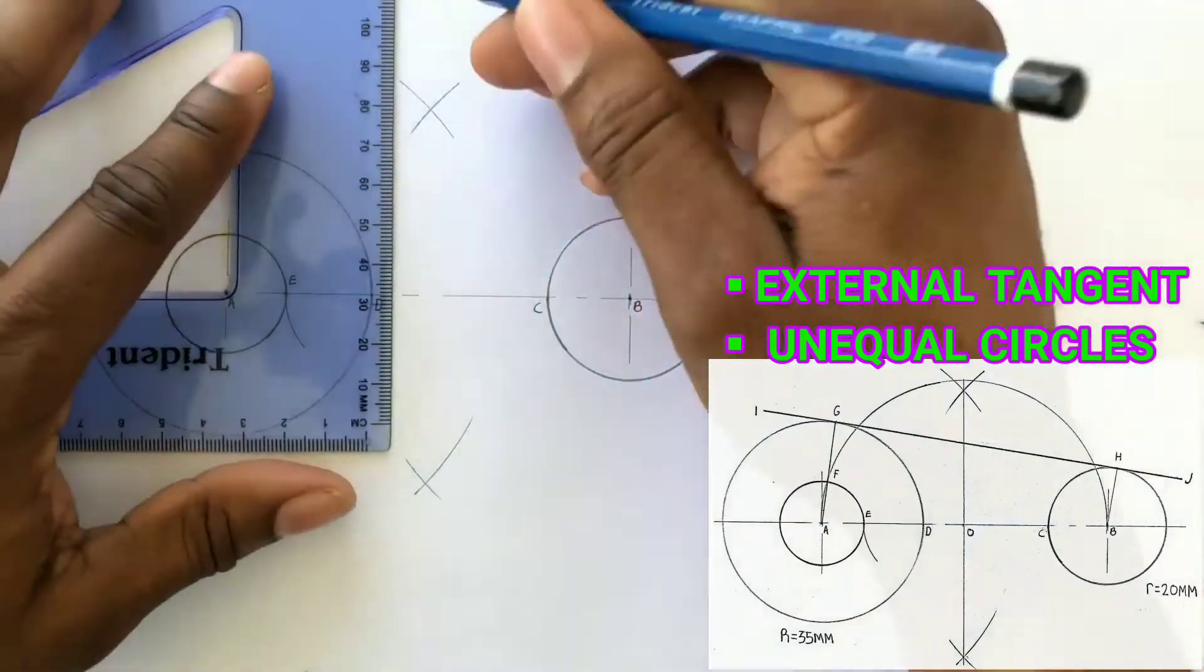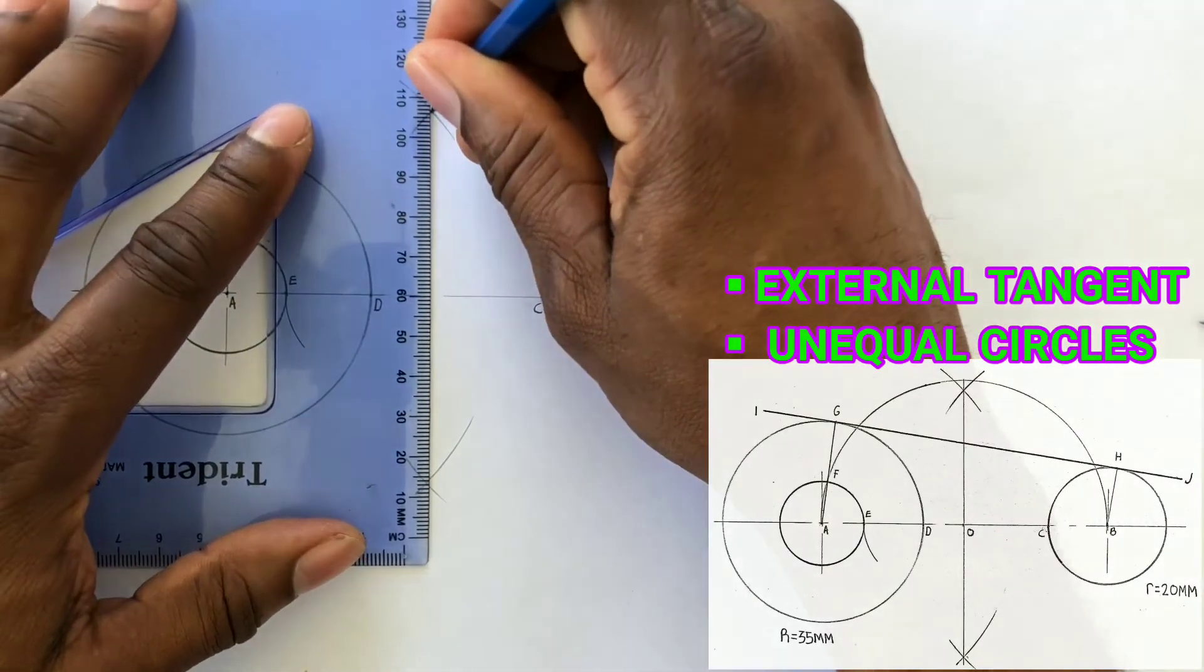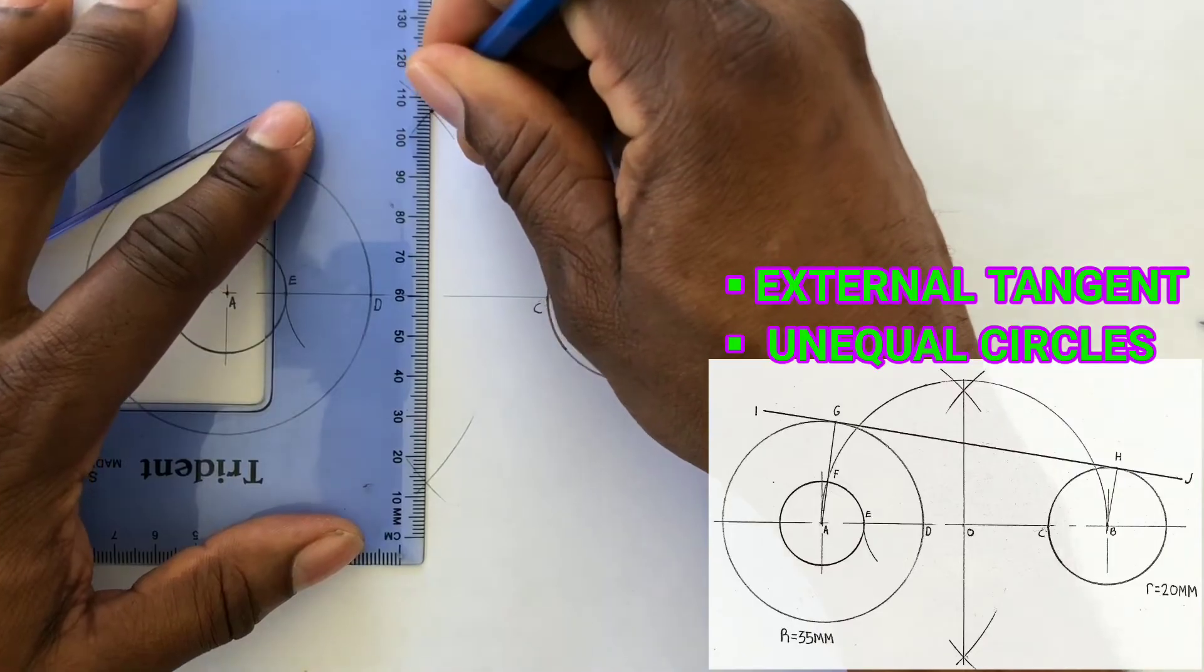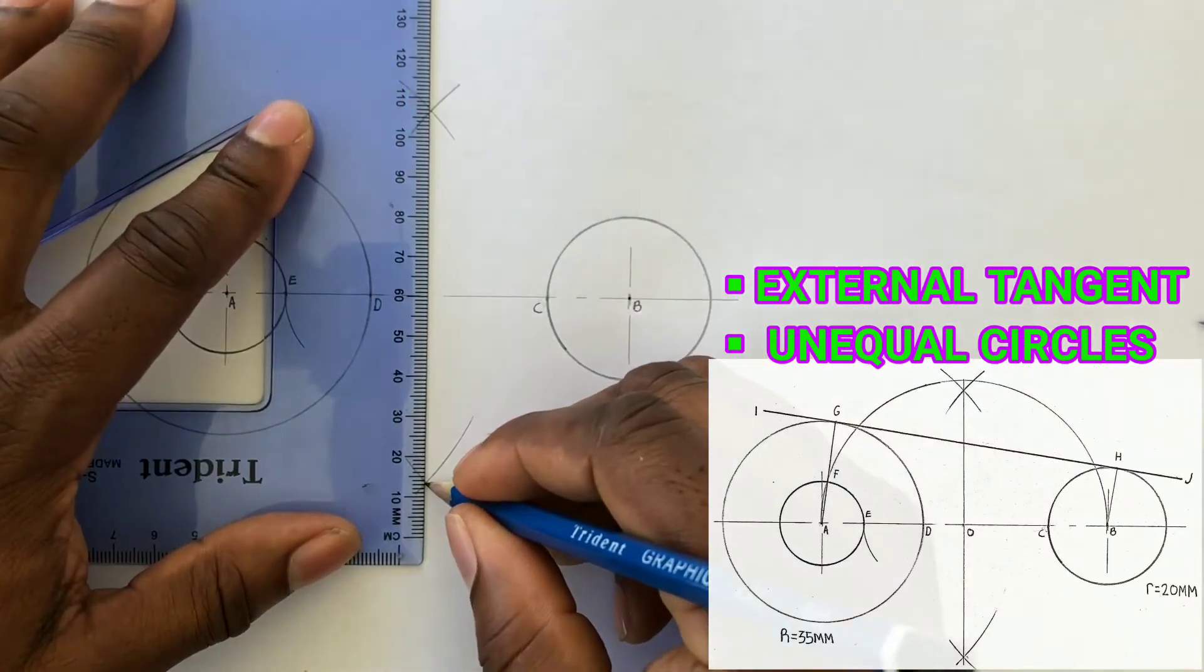We will now draw a line from the top intersection of arcs to the lower intersection of arcs that we drew.